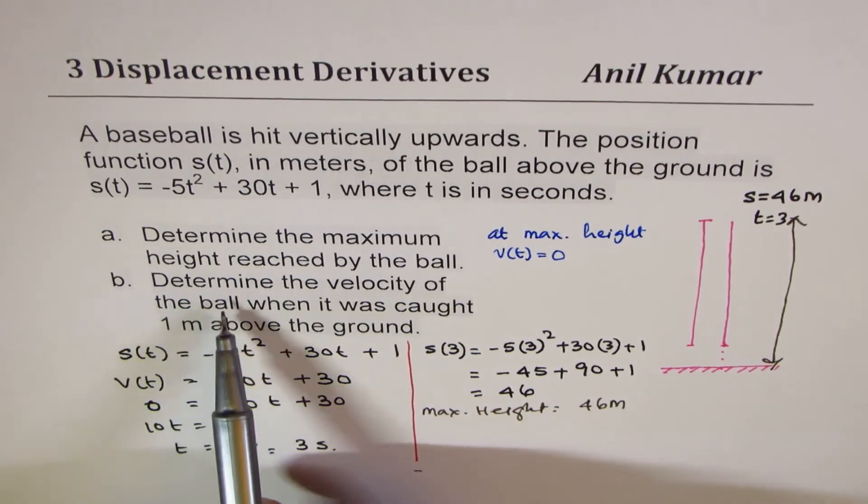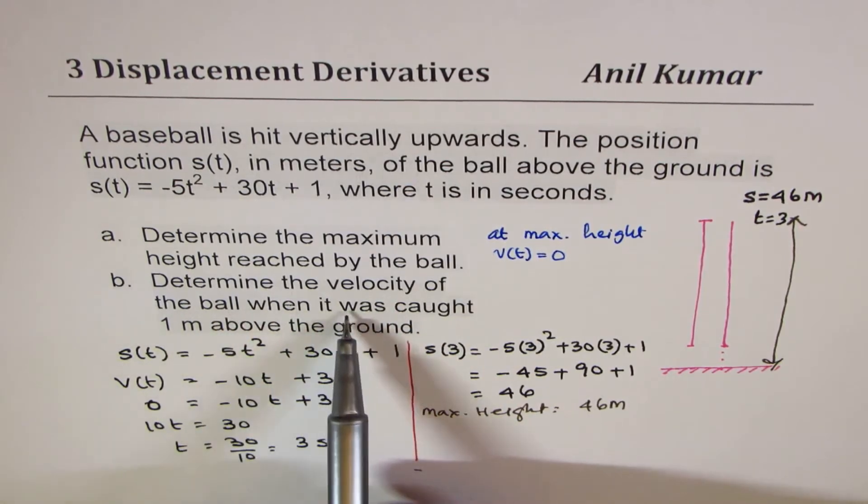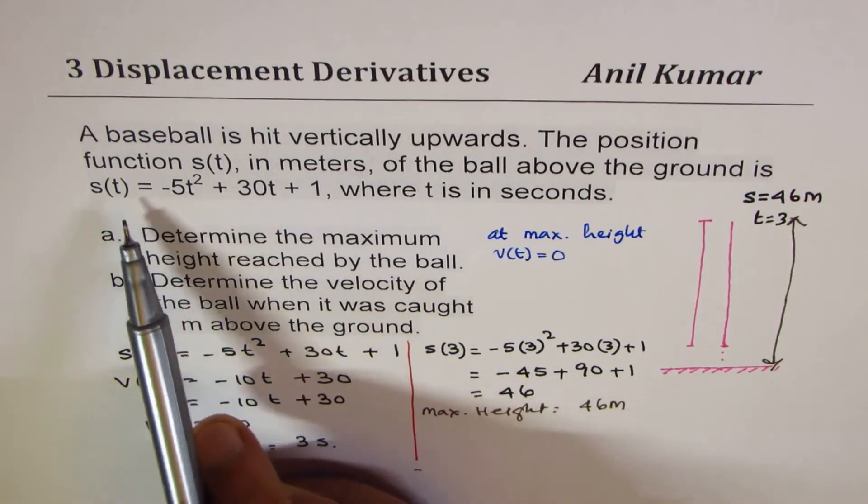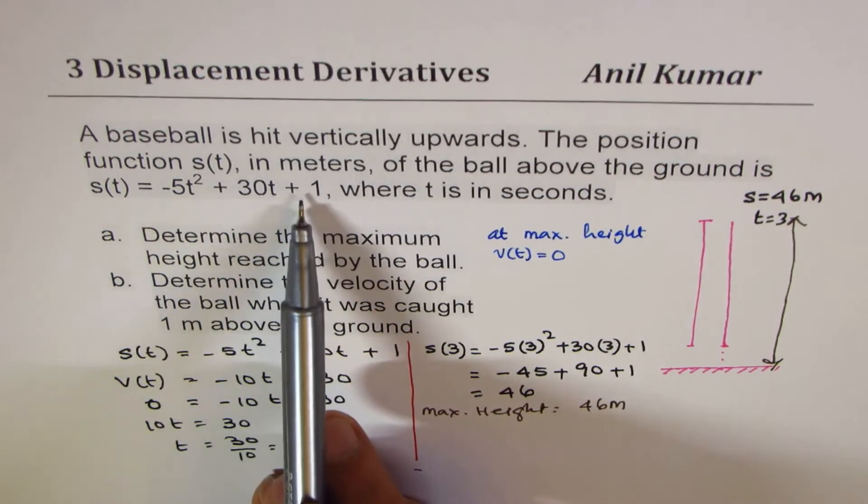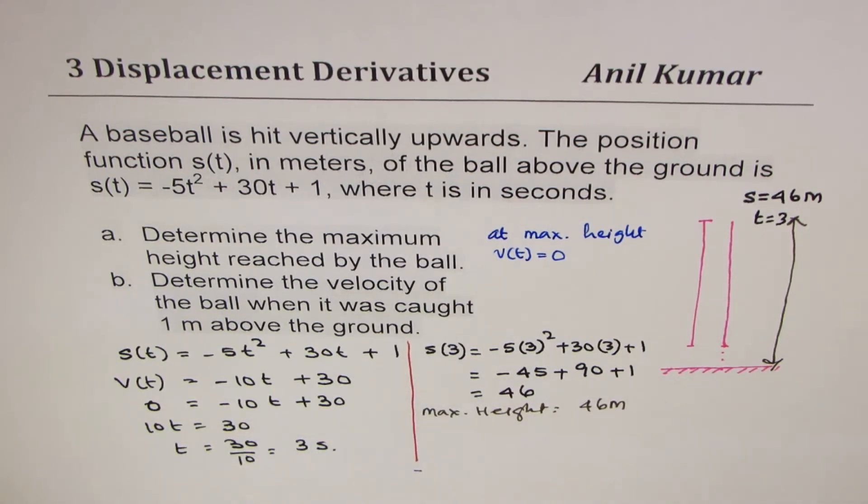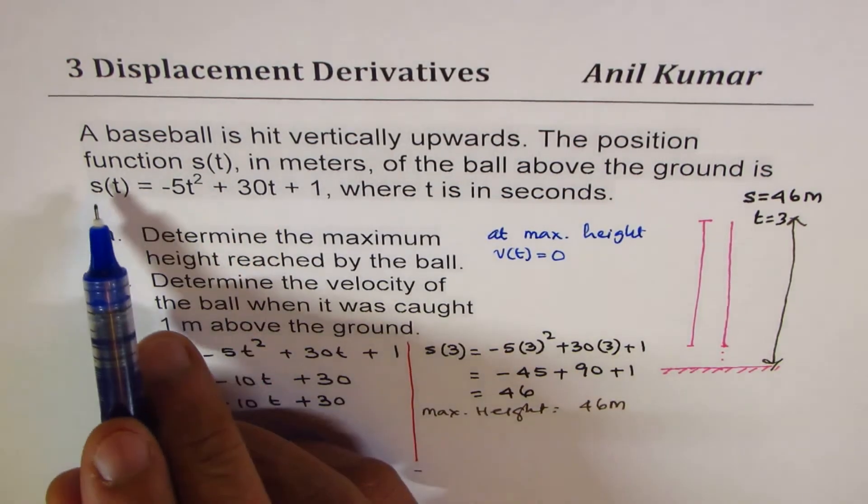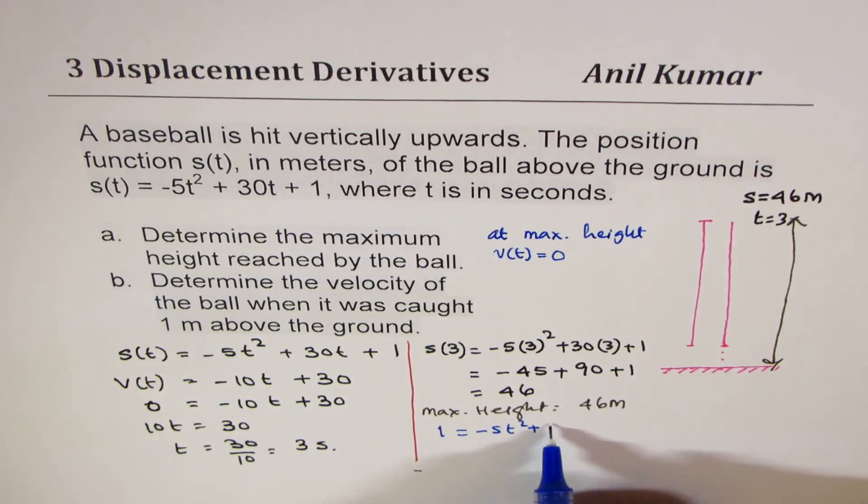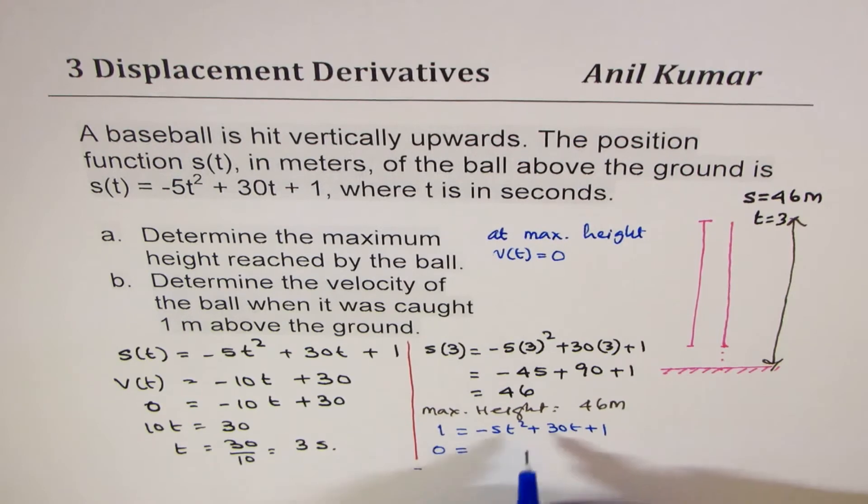Part B is determine the velocity of the ball when it is caught 1 meter above the ground. We have to first find the time when the object is 1 meter above the ground. We can find this time by substituting s(t) = 1. We get -5t² + 30t + 1. Taking 1 to this side, we get 0 equals...